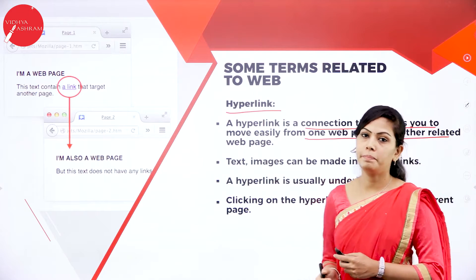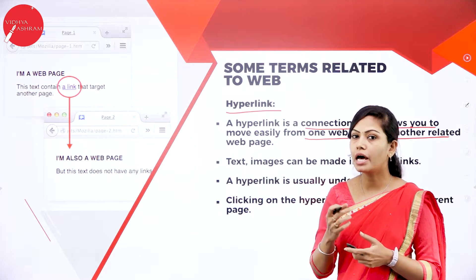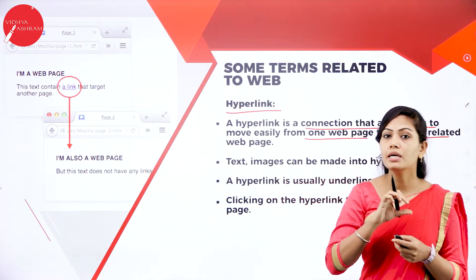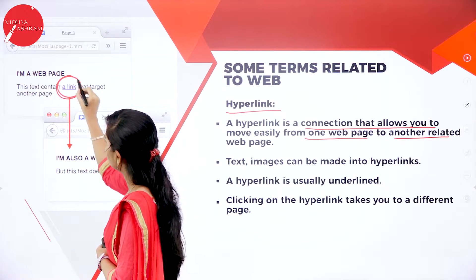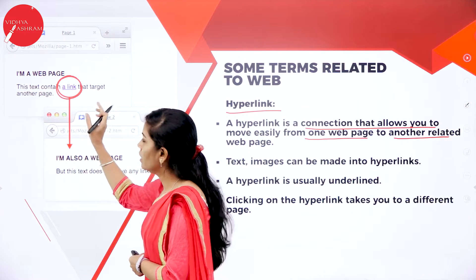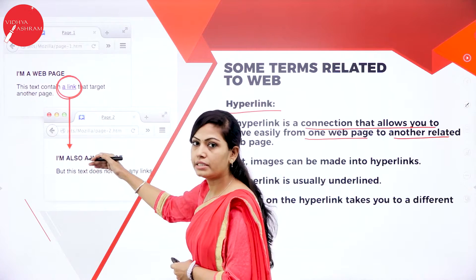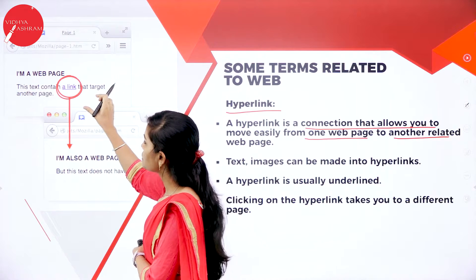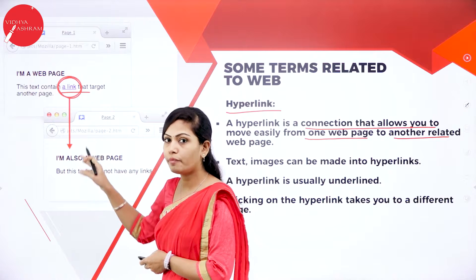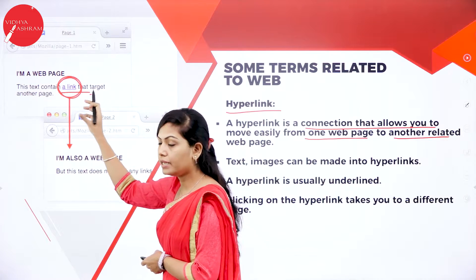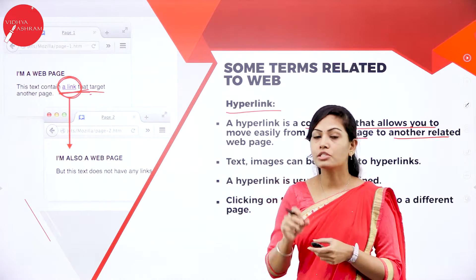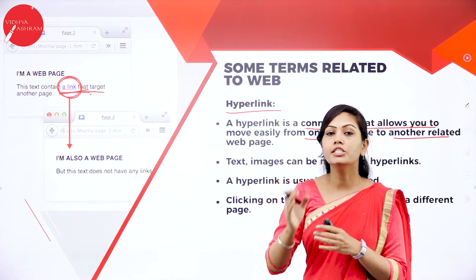Hyperlinks are found in nearly all web pages, allowing users to click their way from page to page. Hyperlinks are often blue and underlined. For example, you can see in the image here — this text contains a link that targets another page. So here we have two web pages: the first page has a link targeting another page, and this link is the hyperlink.